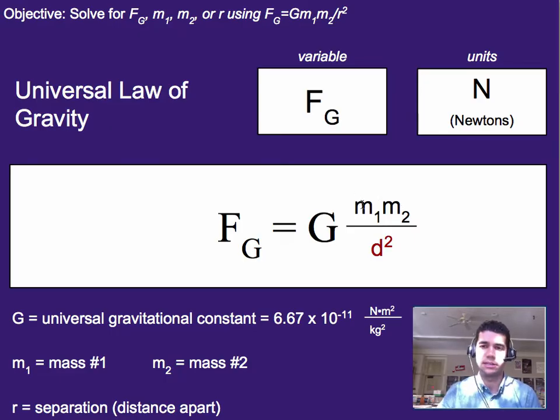Basically, when you get things like the size of Earth here as one of the masses, that offsets this really, really, really tiny number and enables the force to be observable, even at larger distances.